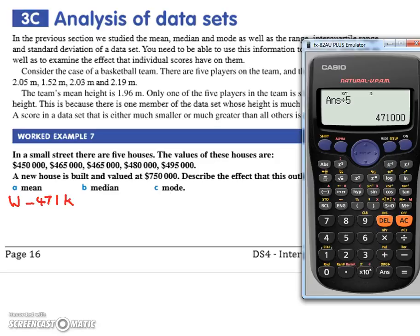I'll explain. I've just found the mean of those first five. Okay, I've written a W. Kirby just asked what's W for? It's for 'was', so that was the money before we have the outlier house.